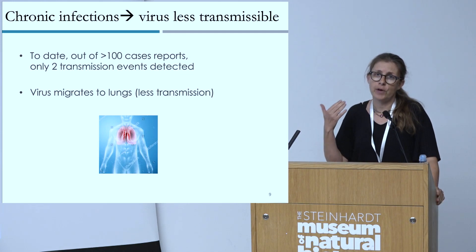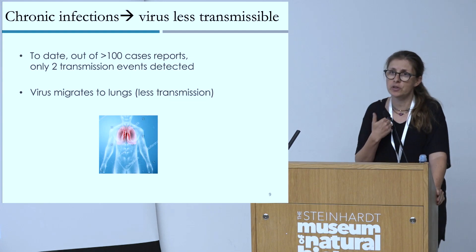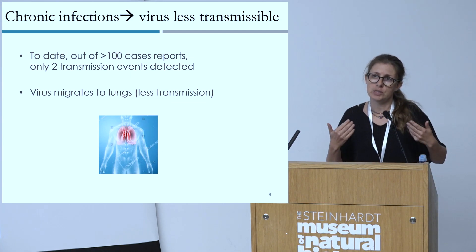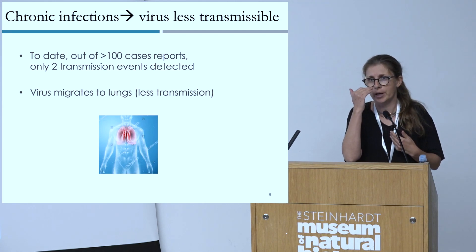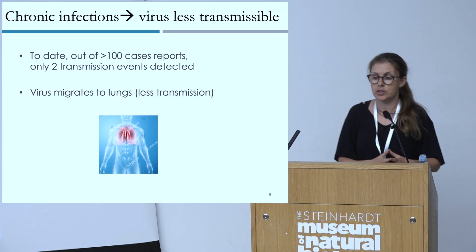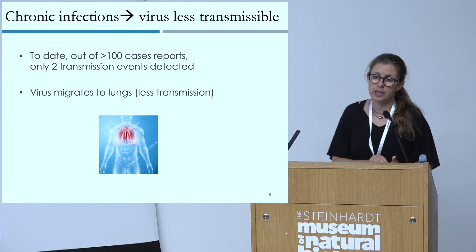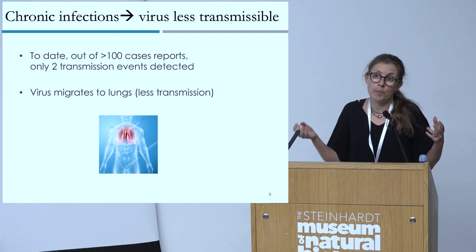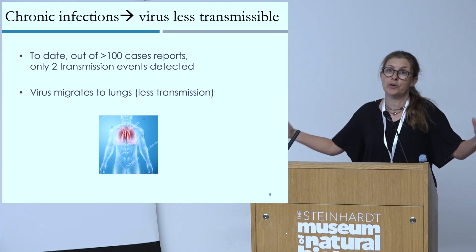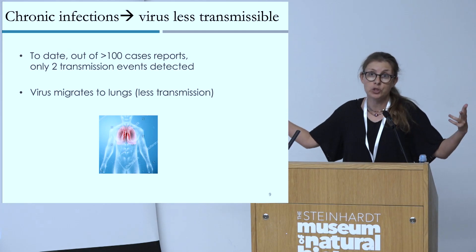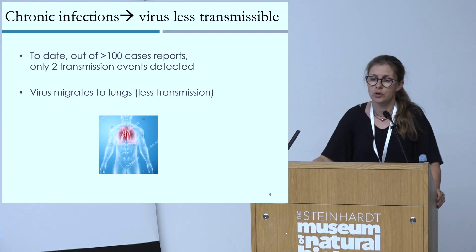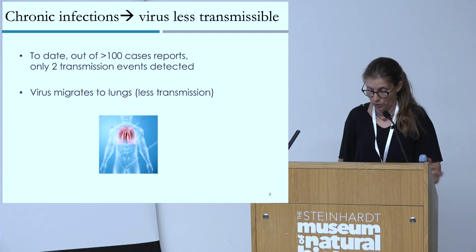What we found is that the virus migrates to the lungs in these chronically infected individuals, making it less transmissible. The virus is most transmissible when present in the upper airways. When it's only in the lungs, it's less transmissible. We have to remember that one in a million of these chronic infections, we may get a virus that is very transmissible — and presumably that's how variants of concern emerged — but most chronic infections are not transmissible.